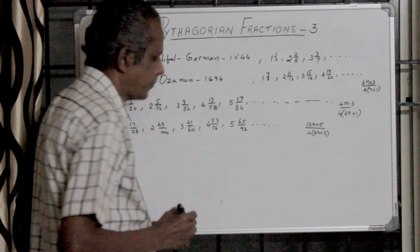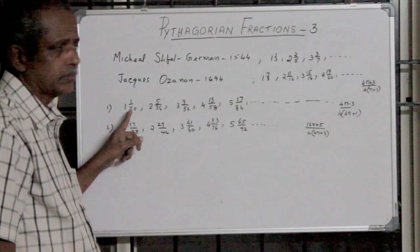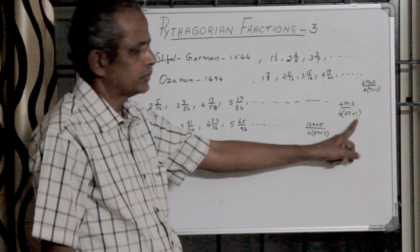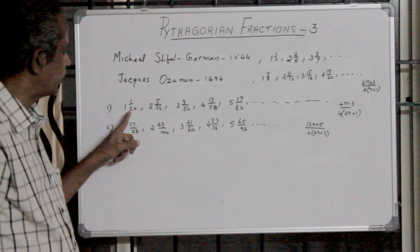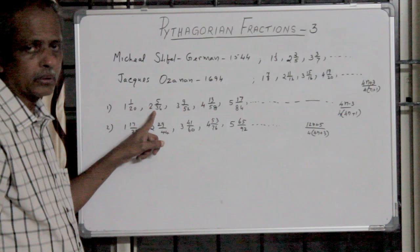To make the denominator, you can use 4 into 4n plus 1. For n equals 1, 5 into 4 is 20. Here n is 2, then 2 into 4 is 8, 8 plus 1 is 9, 9 into 4 is 36.